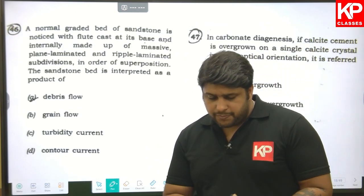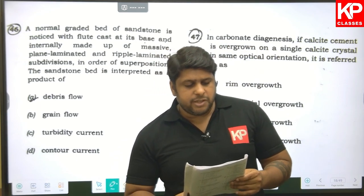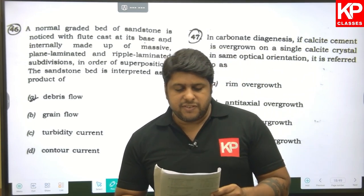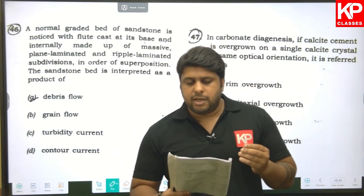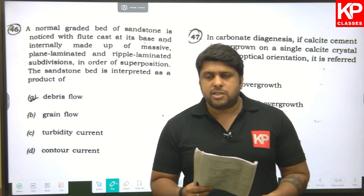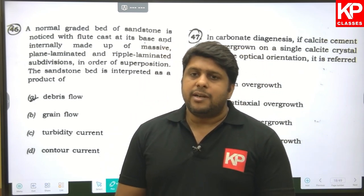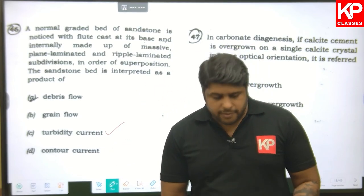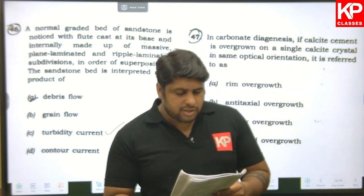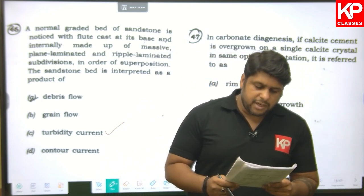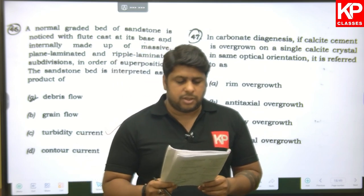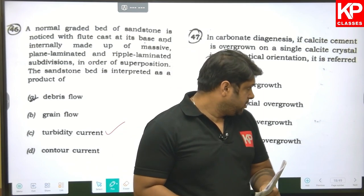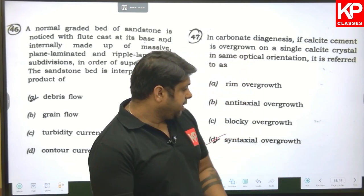Question forty-six: a normal graded bed of sandstone with flute casts at its base and internally made up of massive, plain laminated, and ripple-laminated subdivisions in order of superposition is interpreted as a product of a turbidity current. C is the answer. Question forty-seven: if calcite cement is overgrown on a single calcite crystal in the same optical orientation, it is referred to as syntaxial overgrowth. D is the right answer.